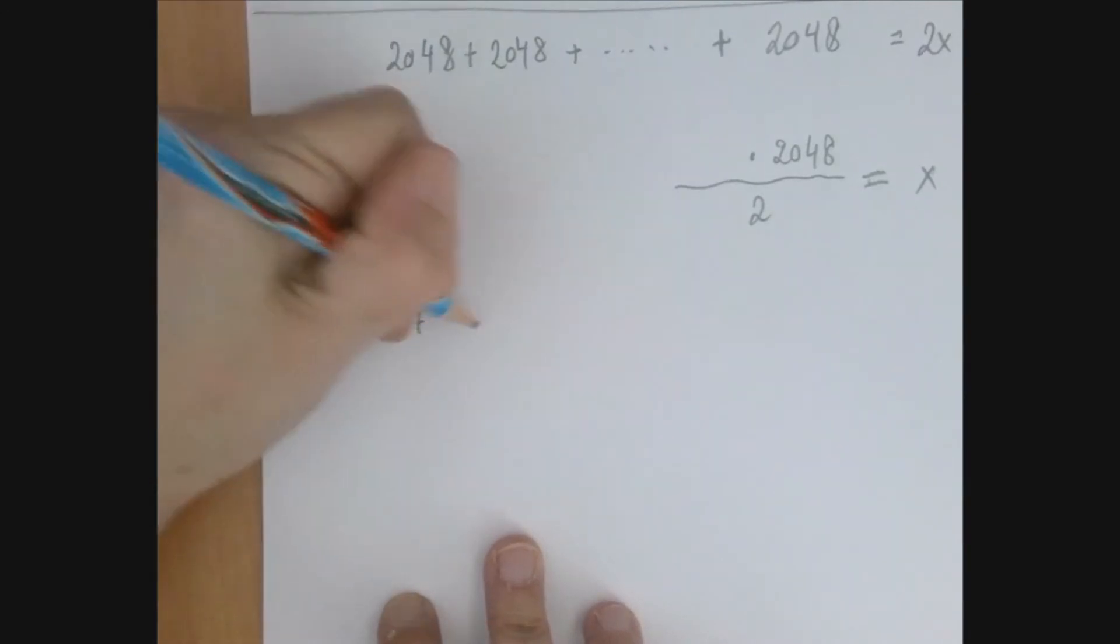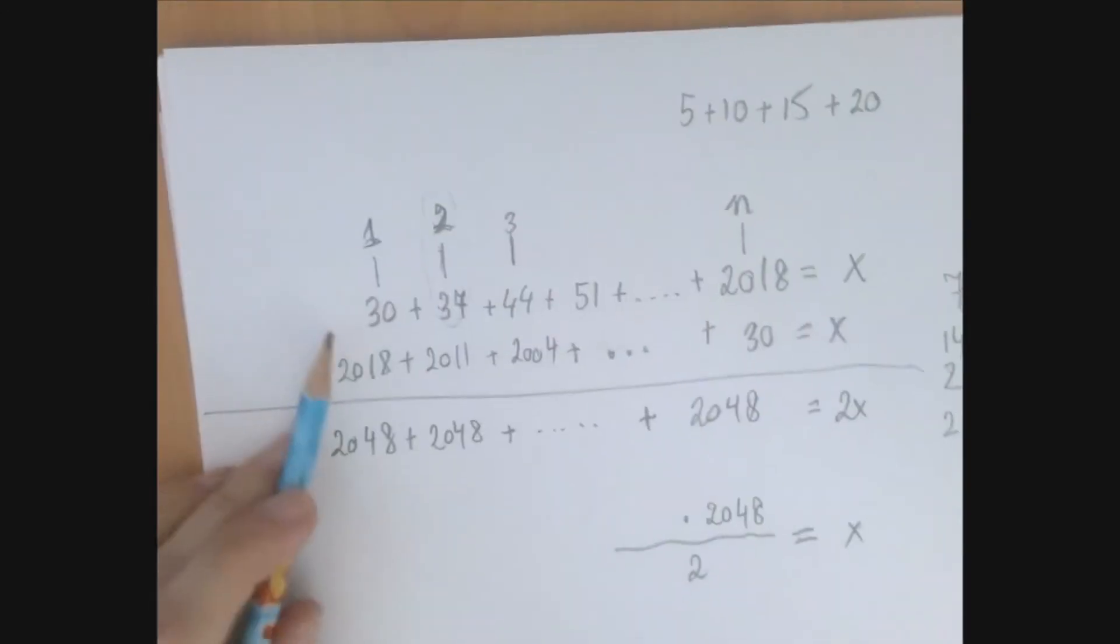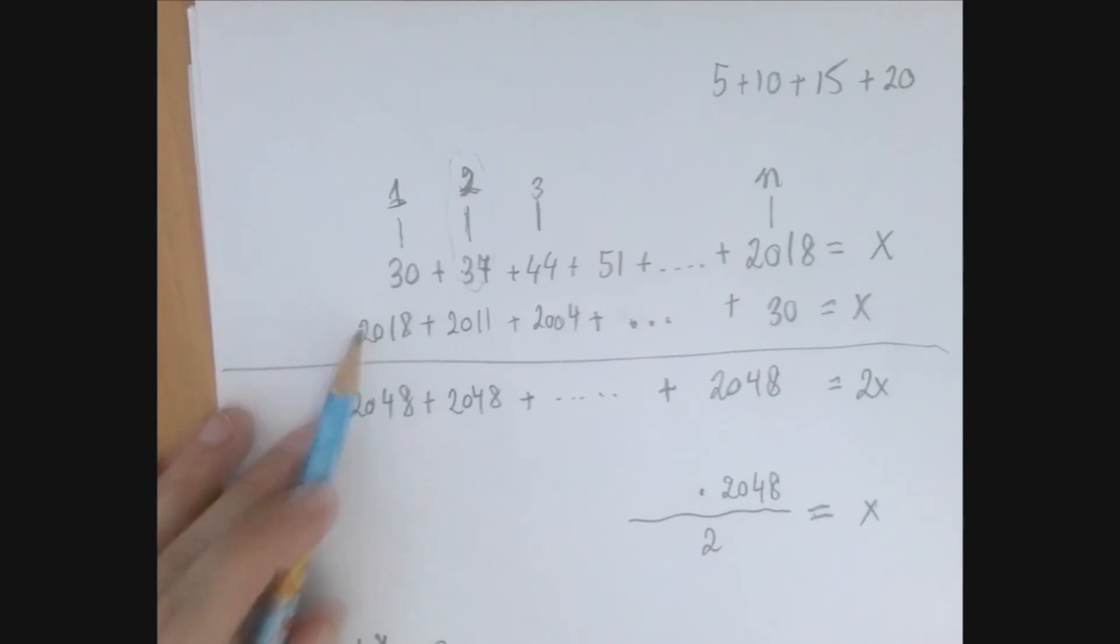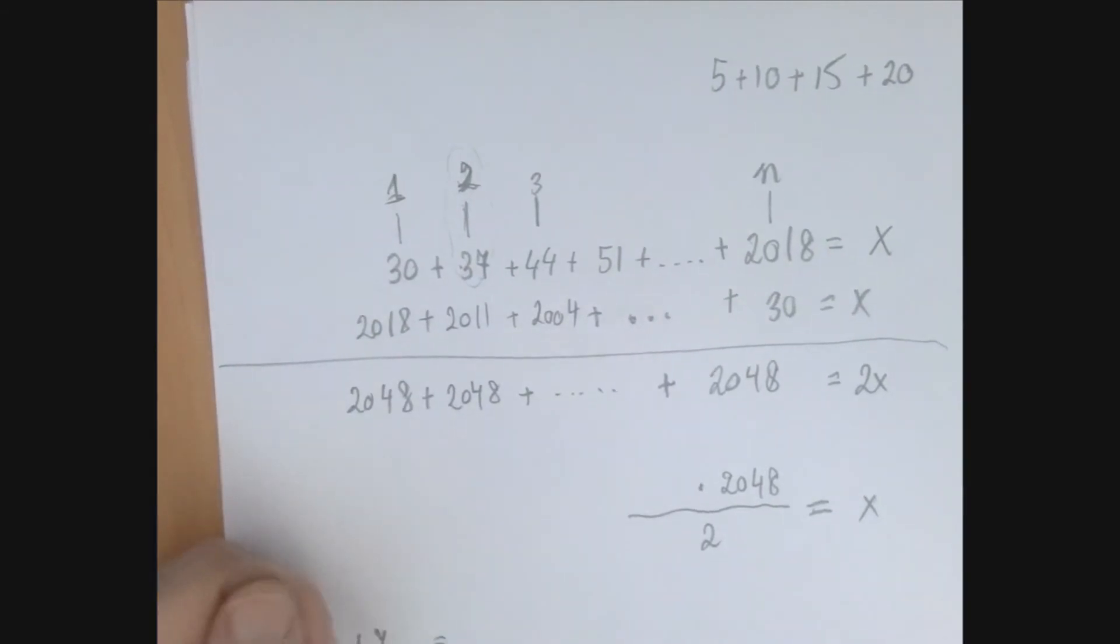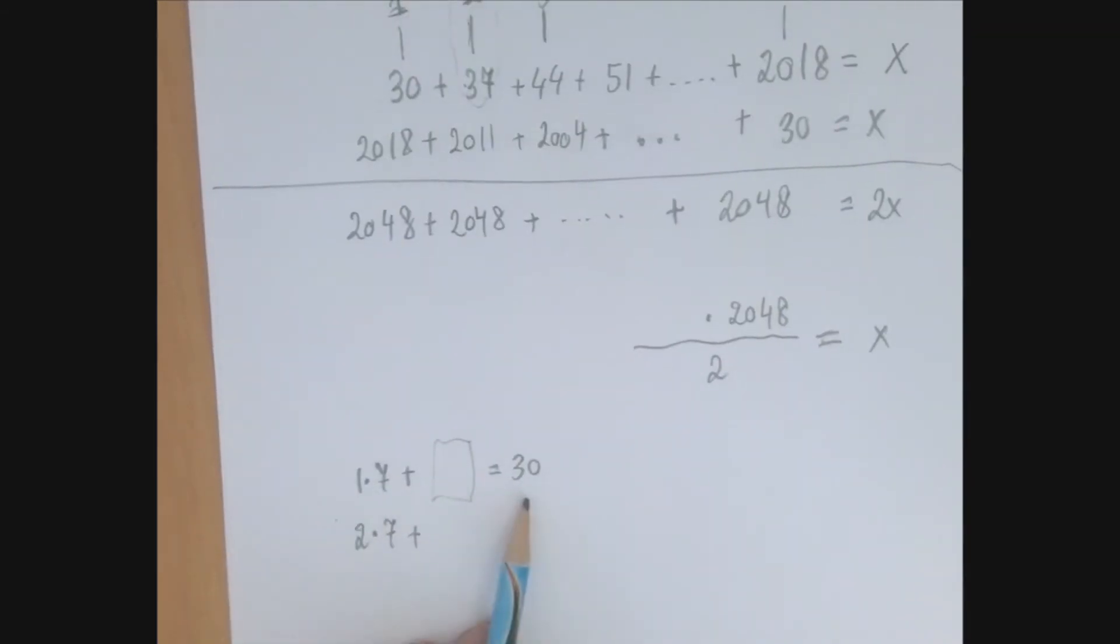1 times 7 is 7, but we want 30. So we're off. Let's add the difference. 1 times 7 plus what number? Well, 1 times 7 is 7, and so we have to add 23 to that.